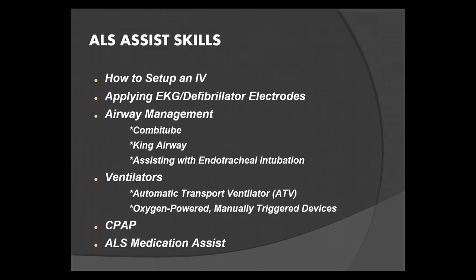First we're going to look at how to set up an IV, then we'll take a look at applying EKG and defibrillator electrodes. We'll take a glance at airway management — this includes combi tube insertion, king airway, and assisting your partner with endotracheal intubation. We'll also look at ventilators, including the automatic transport ventilator and oxygen-powered manually triggered devices, as well as CPAP and assisting with medication administration.